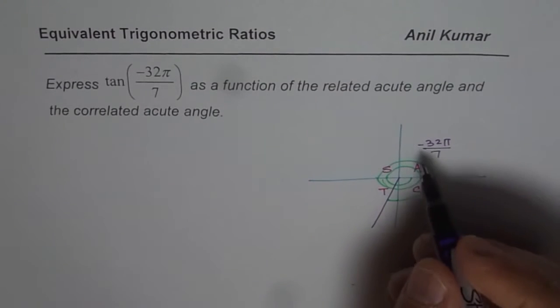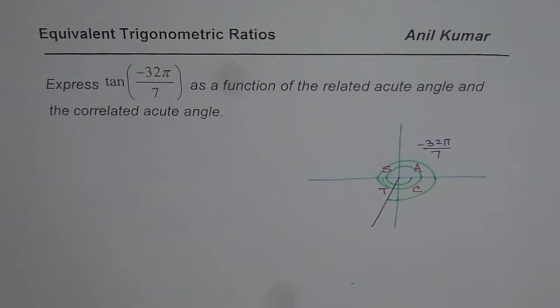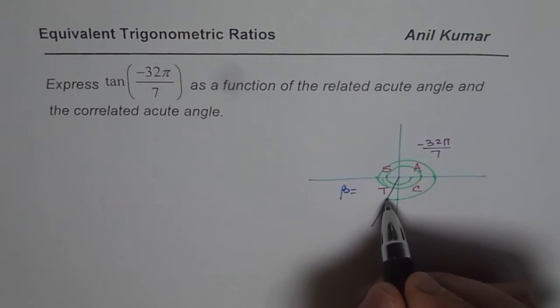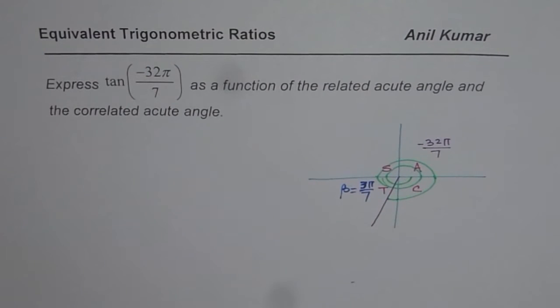Now if this is 32π by 7, then what is the related acute angle? Let me write down the acute angle now. So we say β should be equal to, this is 4. 3 more to go. So 7π, I mean 3π by 7. 3π by 7 becomes my acute angle.